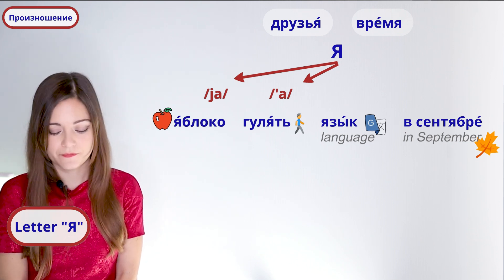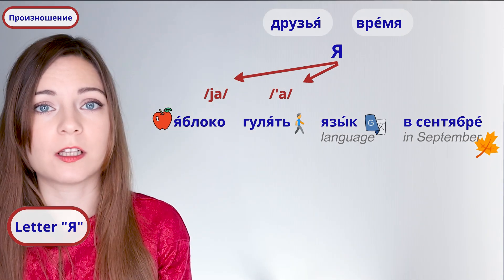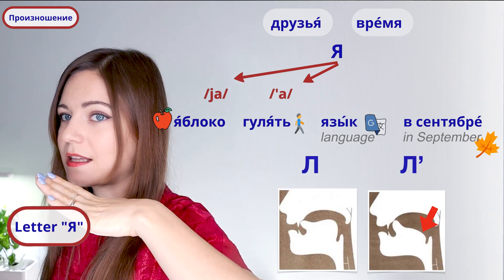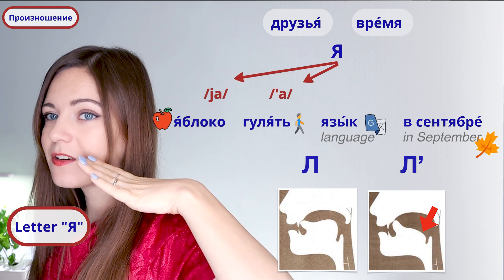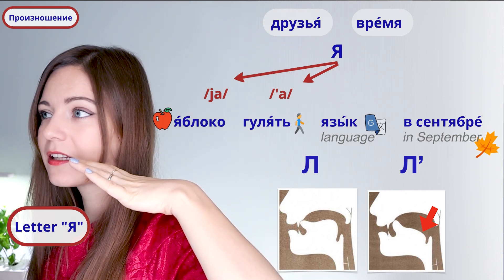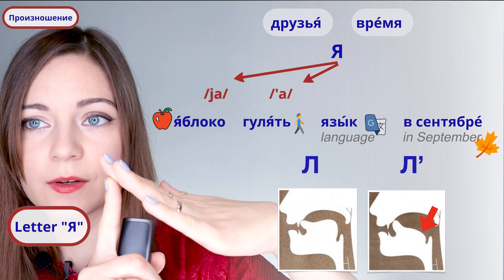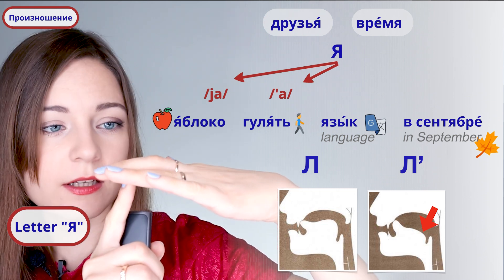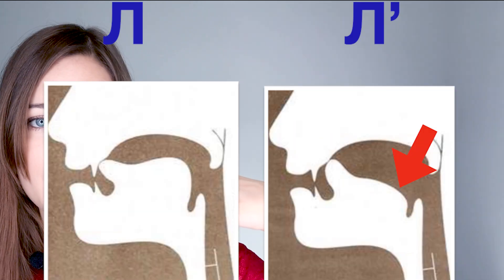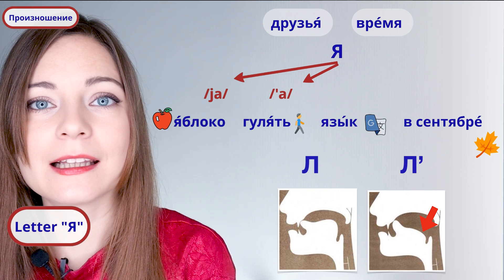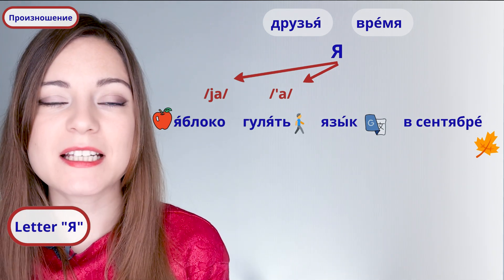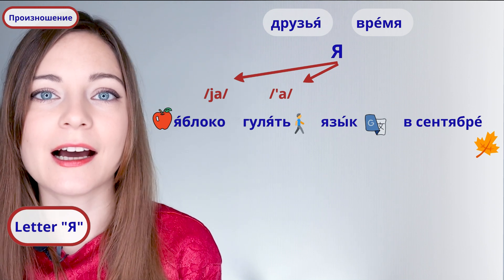We just pronounce soft л and then а — гулять. To learn how to pronounce soft л, start with the normal л. Your tongue should be like this. And now try raising the tongue a little bit. The front part of the tongue goes from this position to this position, getting closer to your hard palate. Remember to keep the root of the tongue lowered. The front and middle part goes up, the root is lowered. And now say л and then immediately а — гулять.